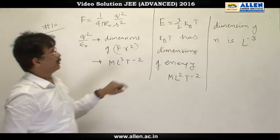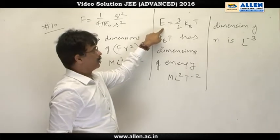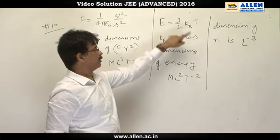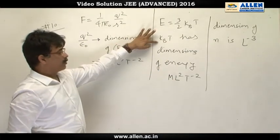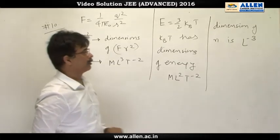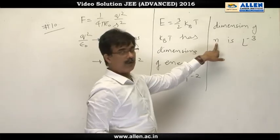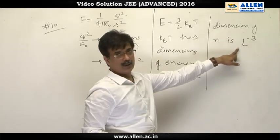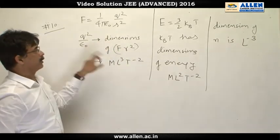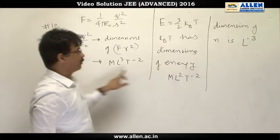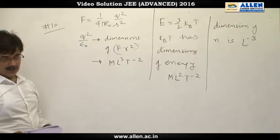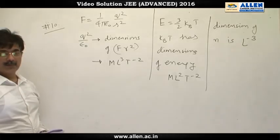Similarly, energy is given by 3 by 2 kT, where k is Boltzmann constant. So kb T has dimensions of energy, which is M L squared T minus 2. And finally, n, it is number per unit volume. This dimension formula is L minus 3. So all the options are based on q square upon epsilon, kb T, and n. On substituting values of these three, we can easily verify the correct options. So on substituting these, we get answers B and D.